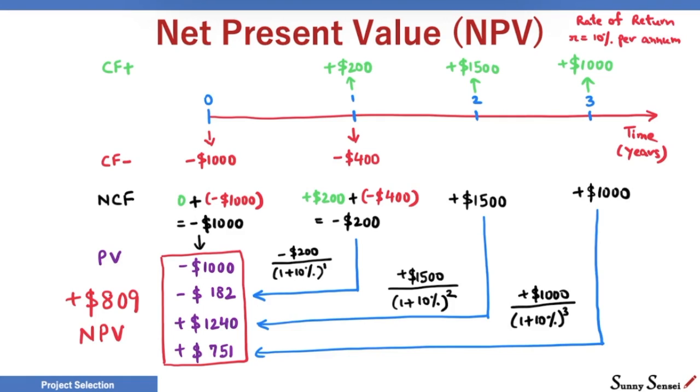It is positive. We will be making money with our investment on this project. The rule is simple: all projects with positive NPV should be undertaken. Negative or zero NPV should not be done. This technique to find the net present value is called Discounted Cash Flow Analysis or DCF. Rate of return is also sometimes called discount rate.